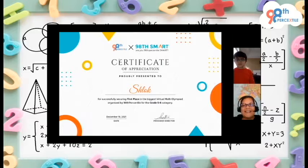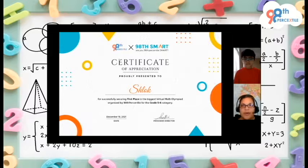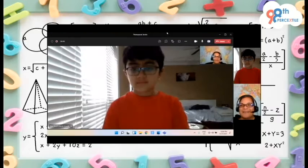Well, let me present your certificate to you. So congratulations Shlok for being our first place winner for grades five and six at the 98 Smart competition, our virtual math olympiad competition. I will be sending this certificate to you along with your Amazon gift card. And what do you plan to buy with that Amazon gift card? I might get some brain teasers or books. Excellent, very good.